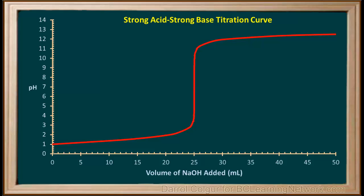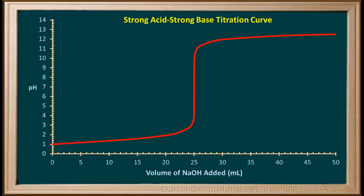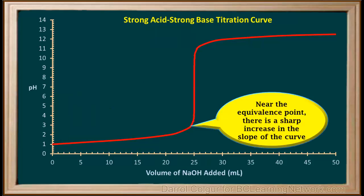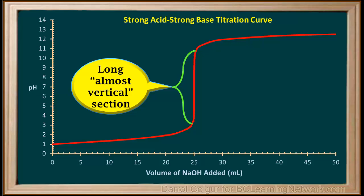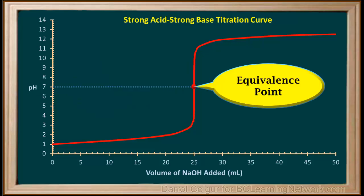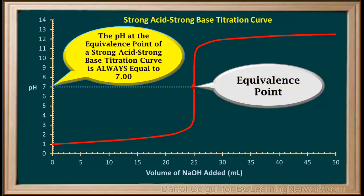Now we'll look at a strong acid-strong base titration curve and review its main features. Because we're starting with a strong acid, the pH starts out with a low value — for example, 0.1 molar HCl gives pH = 1. When we add the base, the pH goes up gradually, but when we get near the equivalence point, the slope shows a sharp increase. There is a long section of the graph that is almost vertical, and right in the center of this vertical portion is the equivalence point, which is always pH 7 for any strong acid-strong base titration.